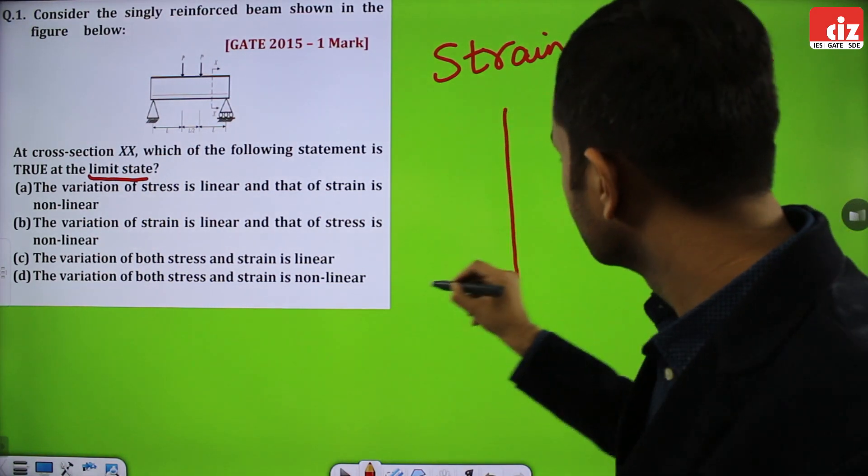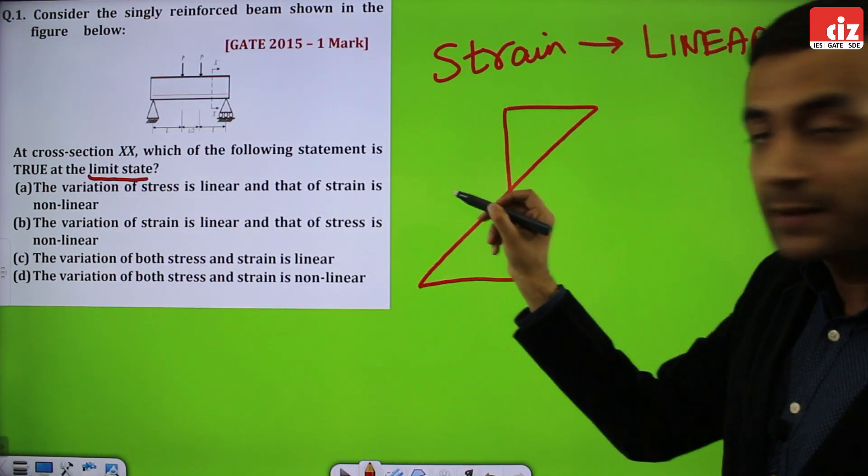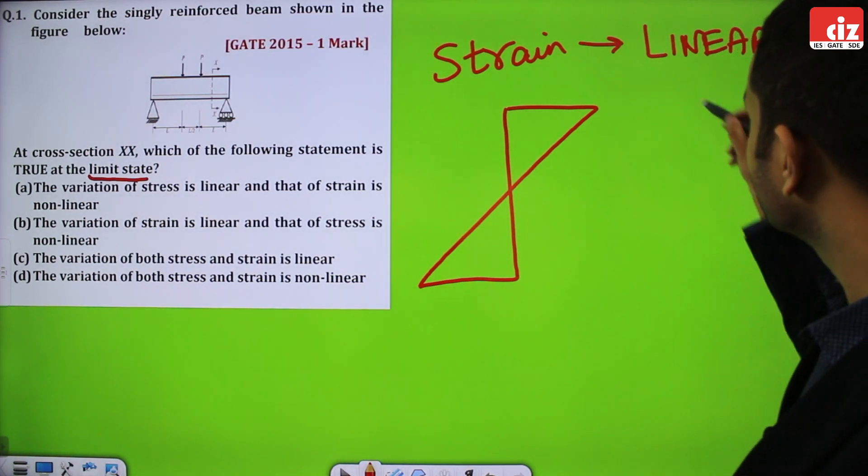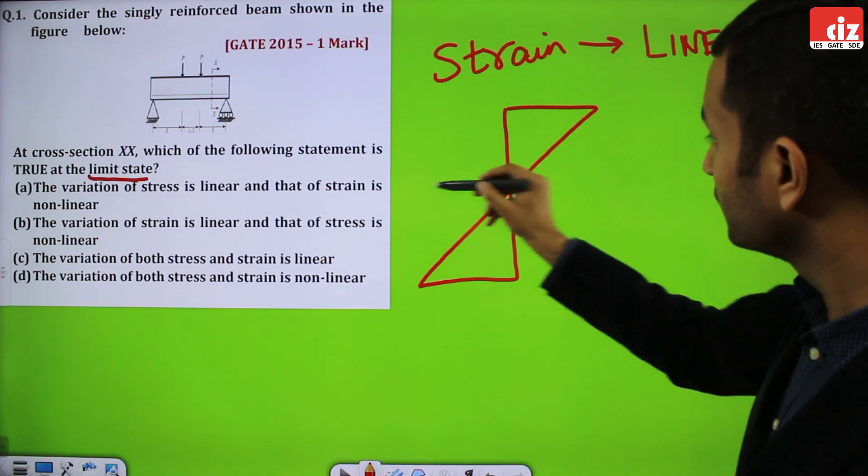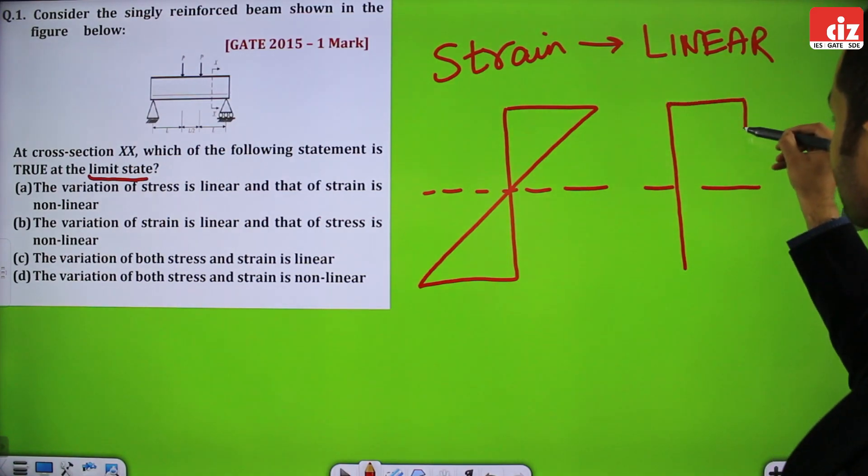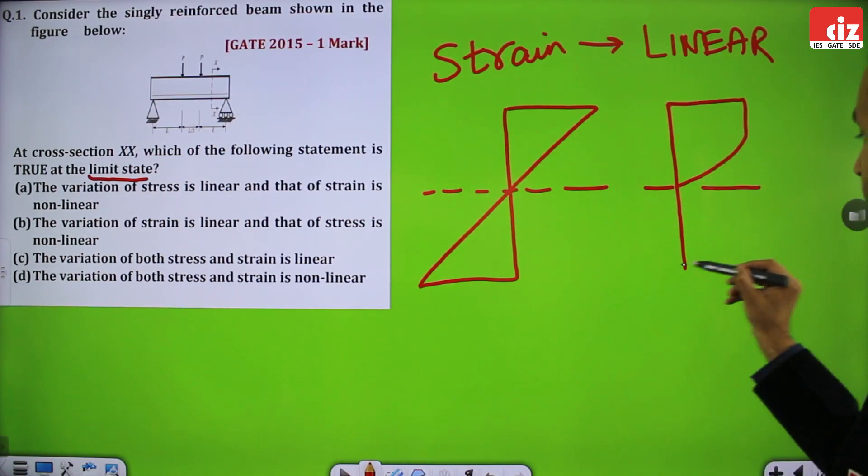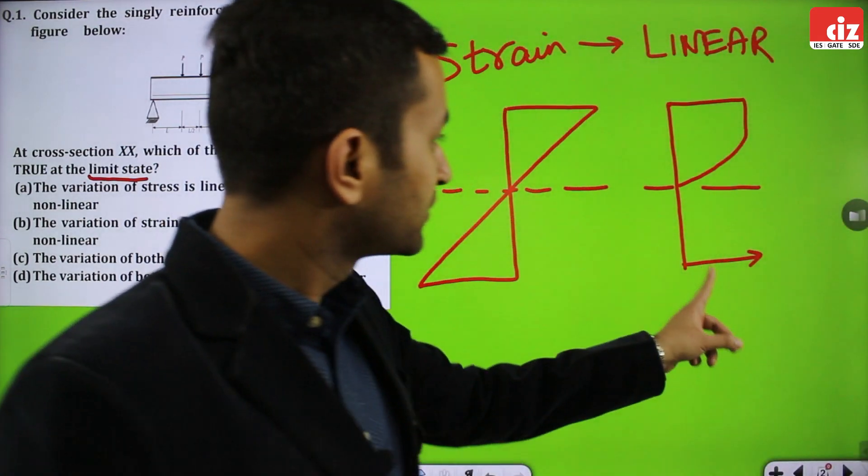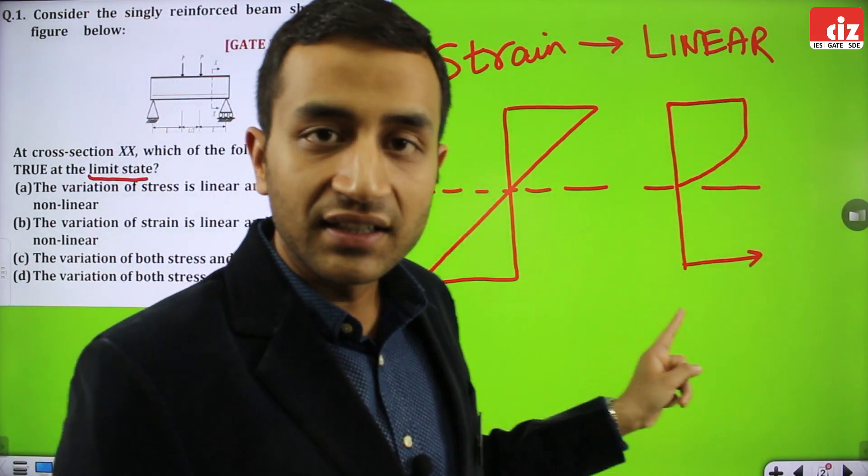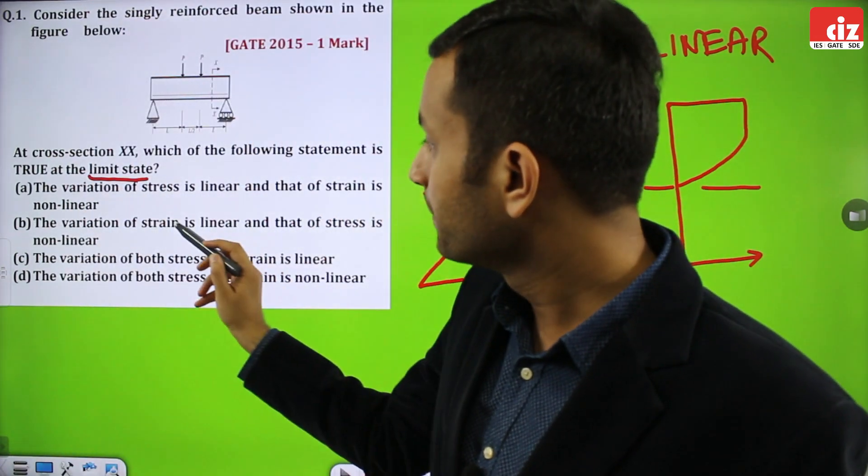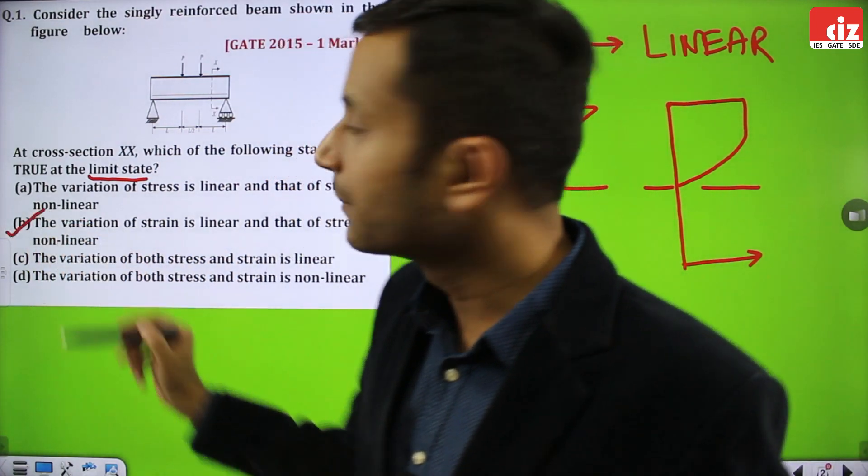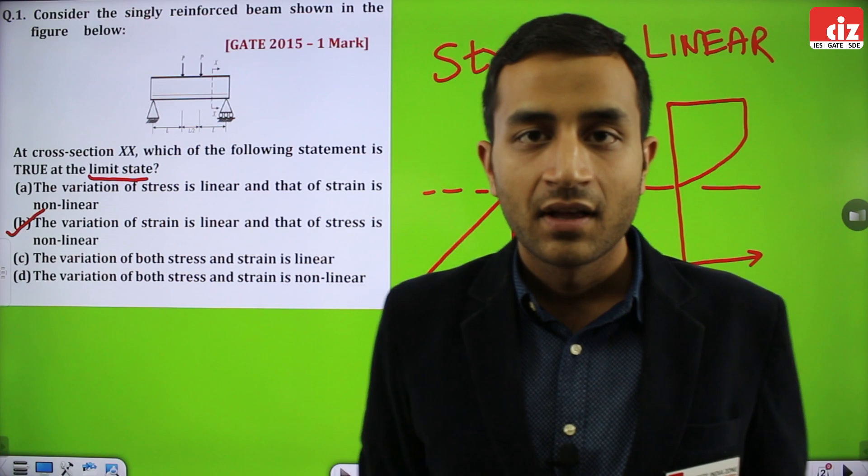This is the strain diagram. This is the neutral axis. If it is sagging, then we have tension below. That means we put the steel below and above the neutral axis, it will have concrete. The stress diagram becomes - you can see this is stress diagram, this is strain diagram, which is linear and this is non-linear. The correct answer would be the variation of strain is linear and that of stress is non-linear. Option number B is correct.